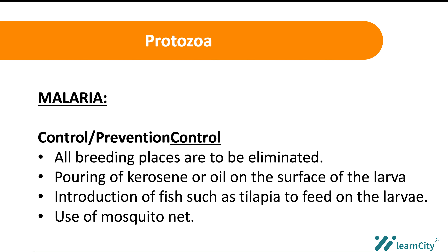Under prevention and control, the major way to prevent and control malaria is by preventing the breeding of the vector, which is the female Anopheles mosquito. All breeding places should be eliminated. Another method is pouring kerosene or oil on the surface of the larvae — the female Anopheles mosquito lays its eggs on stagnant water, so pouring oil or kerosene kills the larvae.